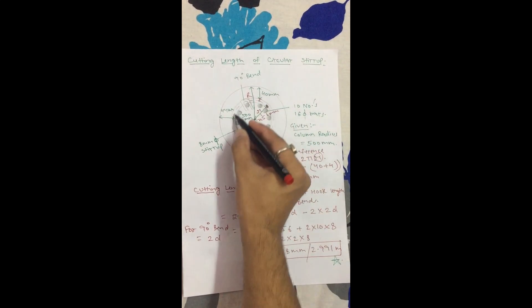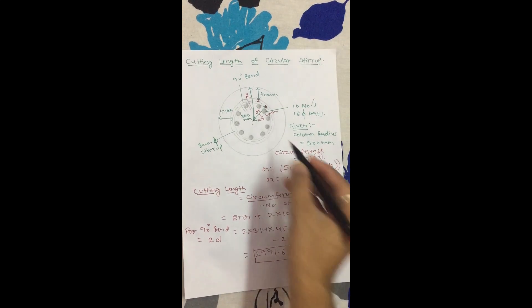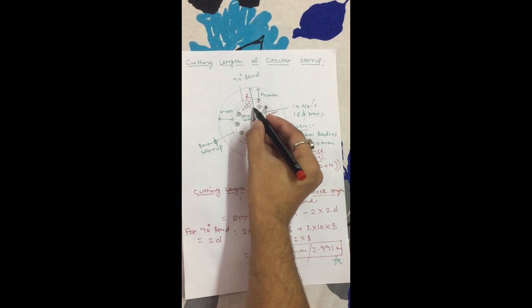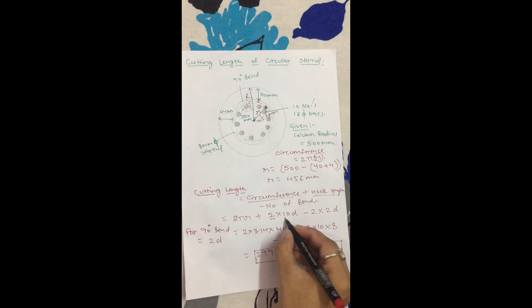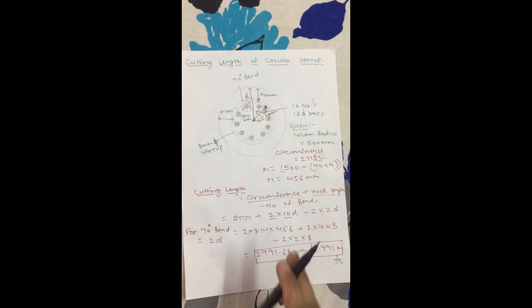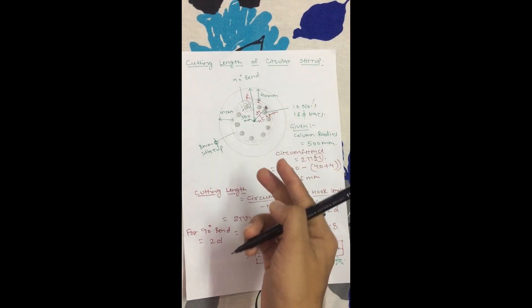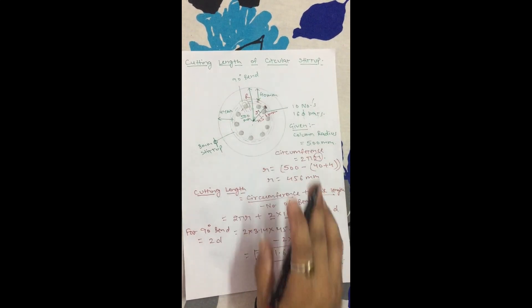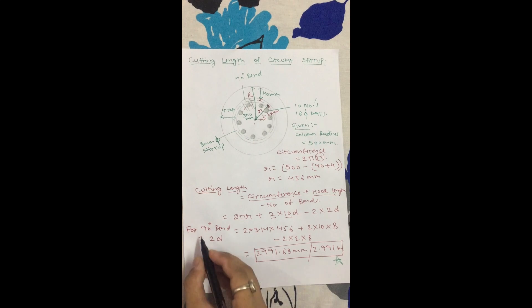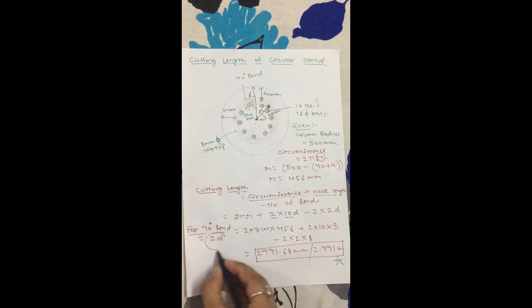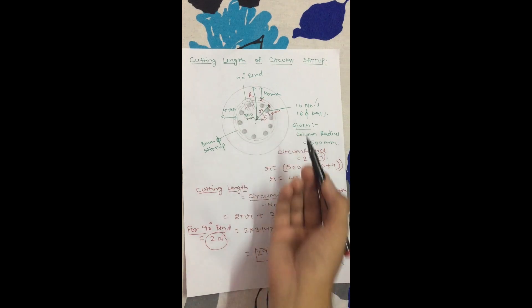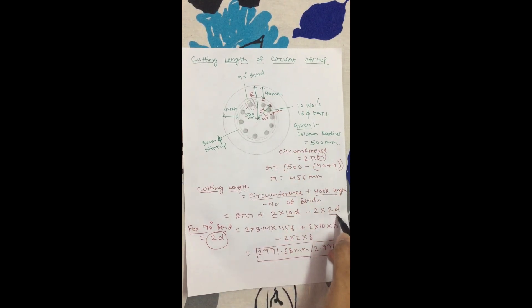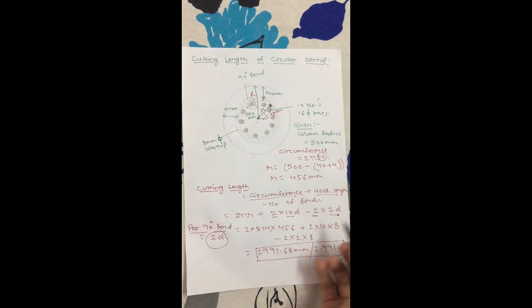So what is the cutting length? The circumference plus hook length. You can see two hooks - one hook is 10D, so 2 hooks is 2 into 10D. Minus the bends - there are 2 bends, and the hooks are 90 degree bends. I have to tell you that if there is a 90 degree bend, then there is 2D length minus. So 2 bends at 90 degrees equals 2D into 2. This is the simple formula.